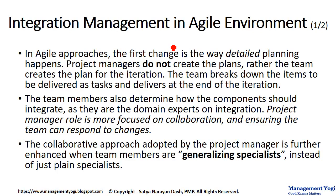In Agile approaches, the first change is the way detailed planning happens. Project Managers do not create the plans. Rather, the team creates the plan for the iteration. Agile is both iterative as well as incremental. Because it is iterative, it will have iterations. And the plan for the iteration will be done by the team members, not by the manager.